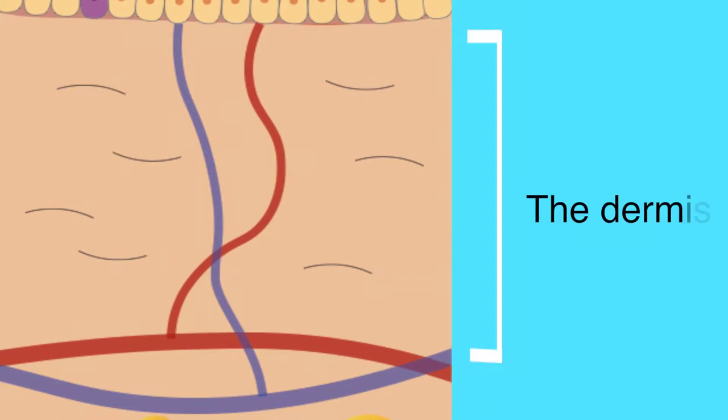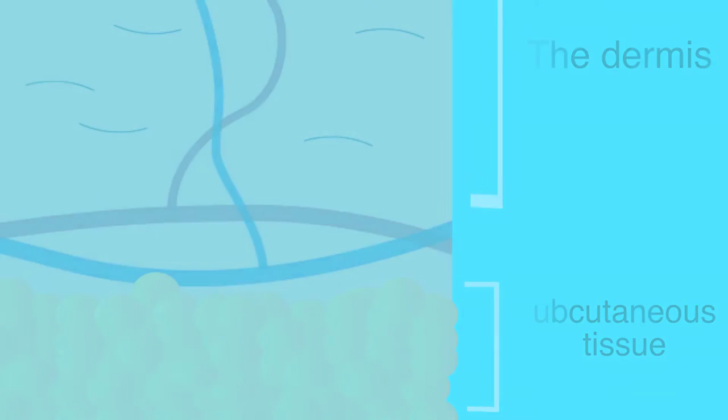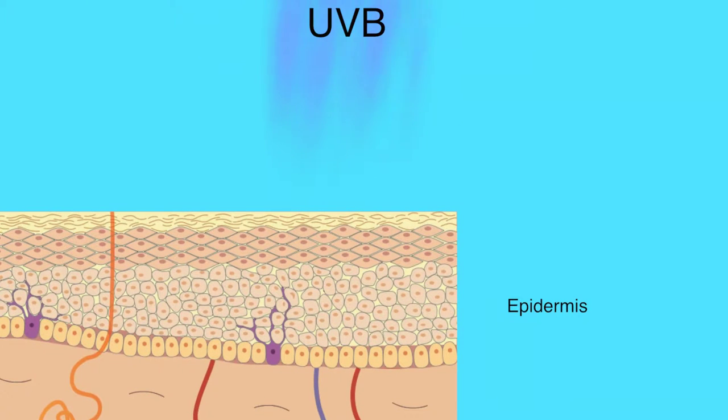Supporting the epidermis is a more internal layer, the dermis, which contains many blood vessels. Below this is the subcutaneous tissue. Although very dangerous, UVB radiation only affects the epidermis.